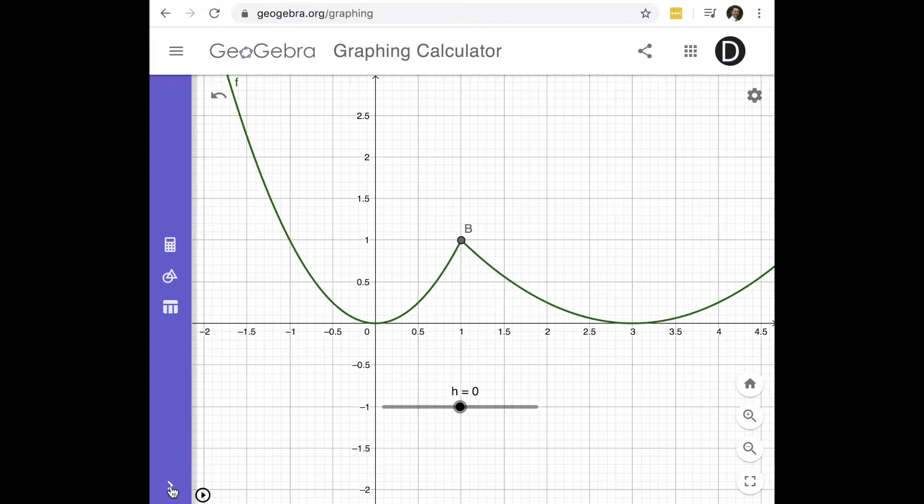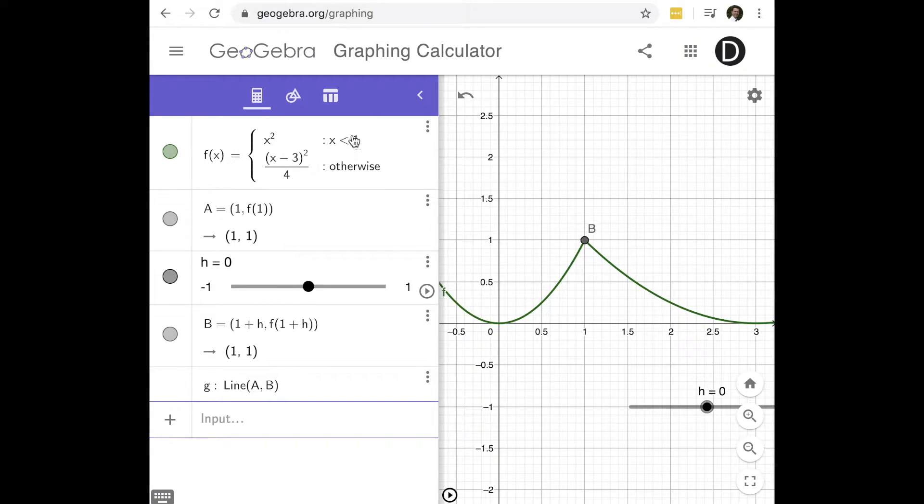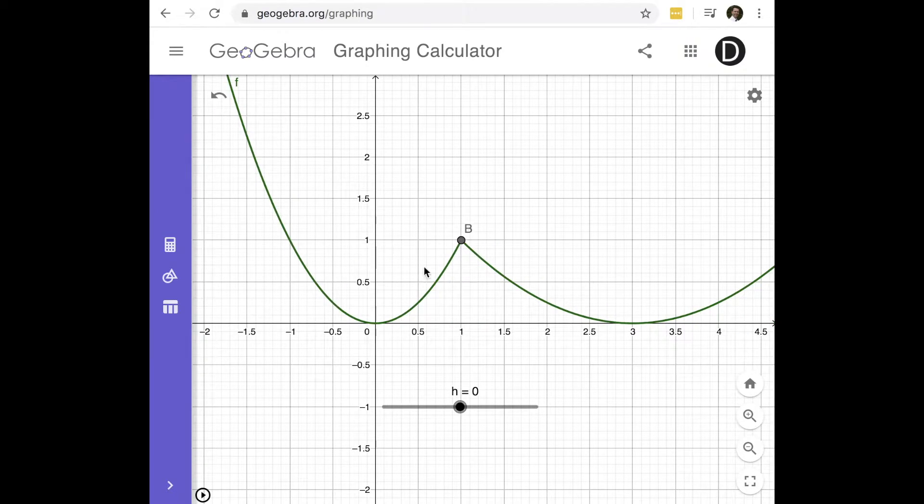Just to show you what that formula looks like. When x is less than 1, I use the function x squared. And when x is greater than or equal to 1, I use this additional parabola. It has a vertex at x equals 3. But what I want to point out is that at this point at x equals 1, the graphs meet at a corner.